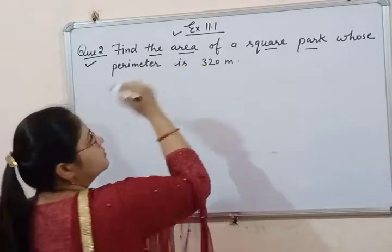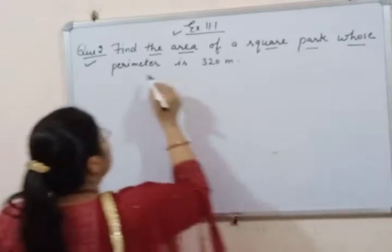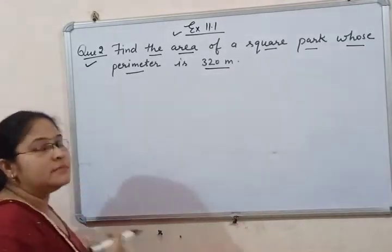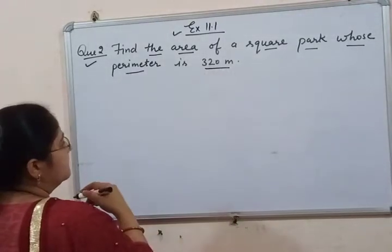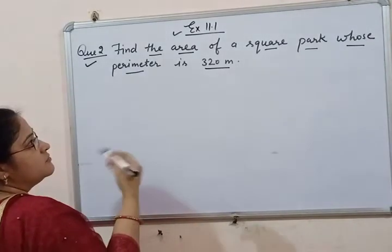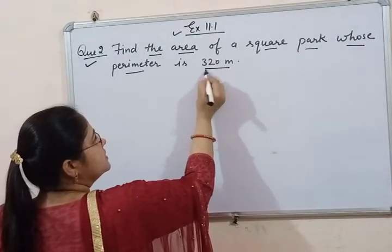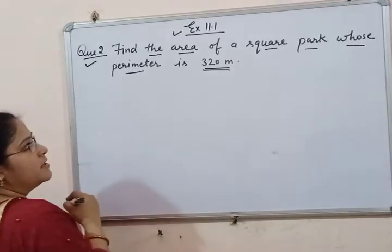The perimeter is 320 meters. Many people are confused here because the side is not given.